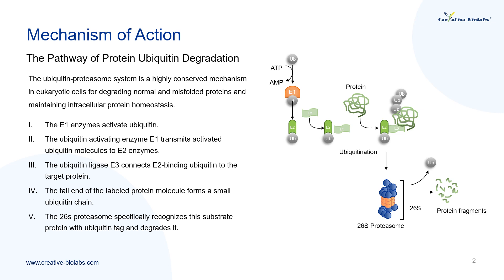The ubiquitin proteasome system is a highly conserved mechanism in eukaryotic cells for degrading normal and misfolded proteins and maintaining intracellular protein homeostasis. The ubiquitin proteasome system includes ubiquitin, ubiquitin-activating enzyme E1, ubiquitin-binding enzyme E2, ubiquitin ligase E3, the 26S proteasome, and ubiquitin enzyme.